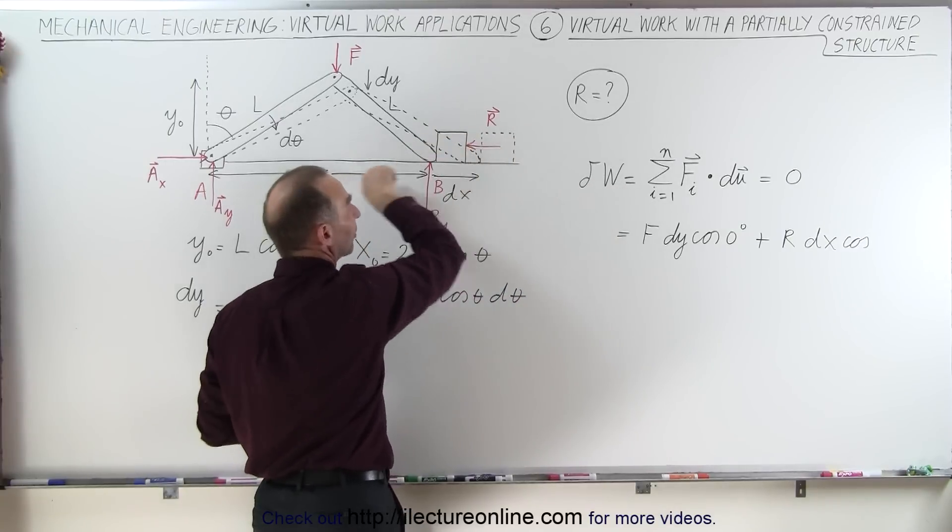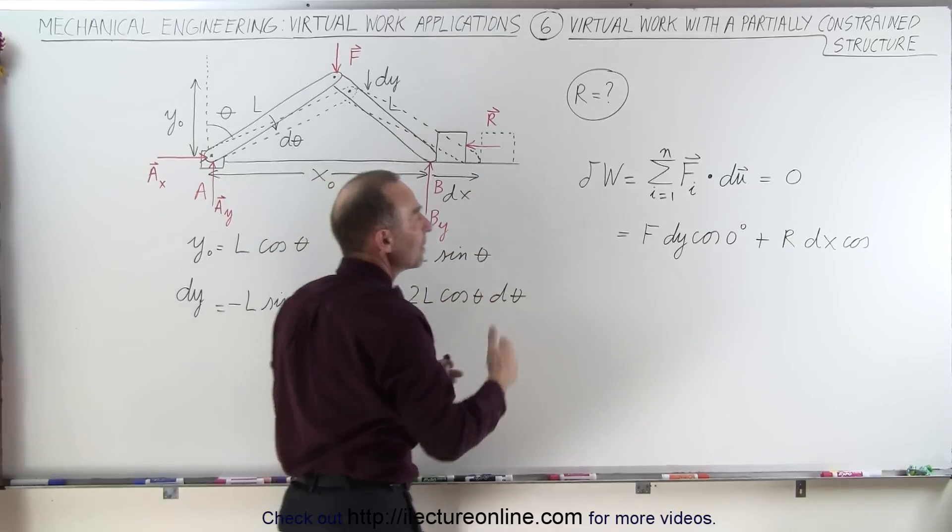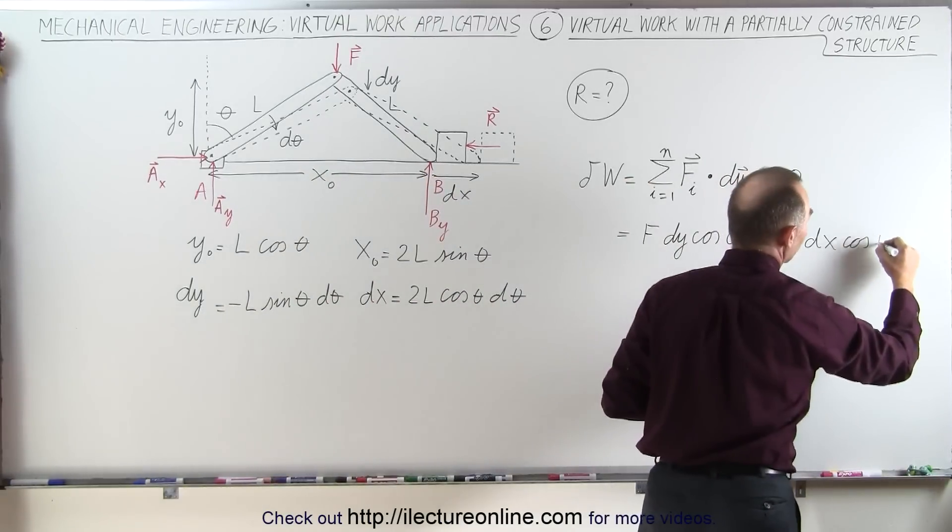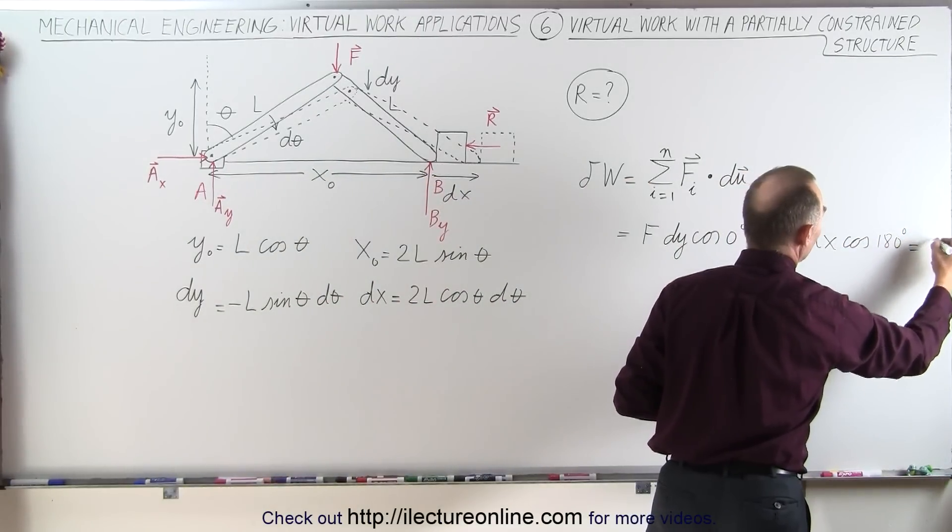R is acting to the left, dx is to the right, which means the angle is 180 degrees. And that should add up to zero.